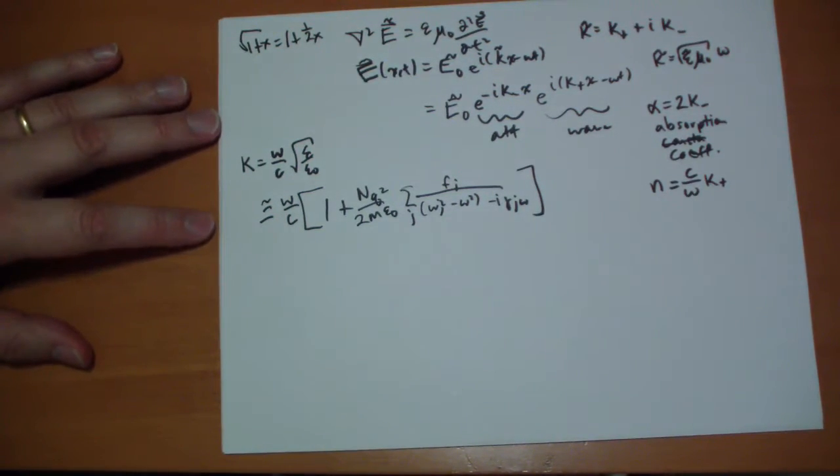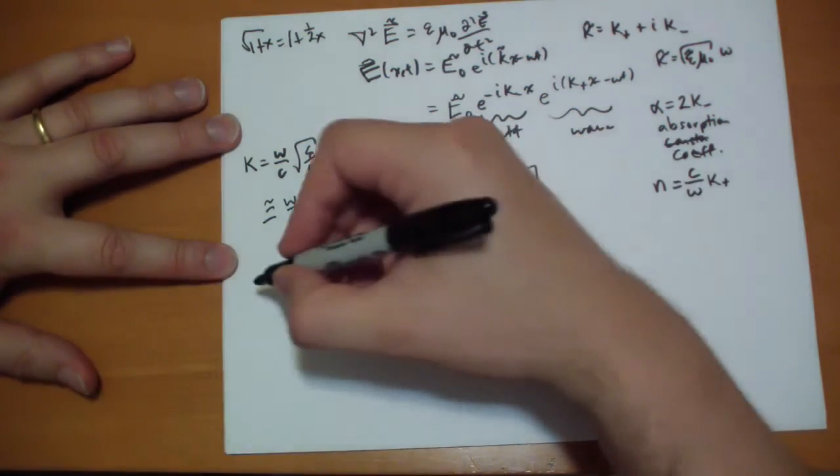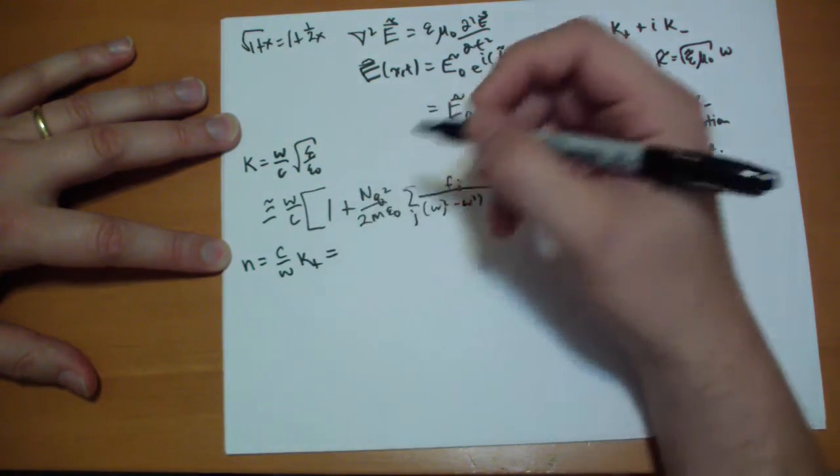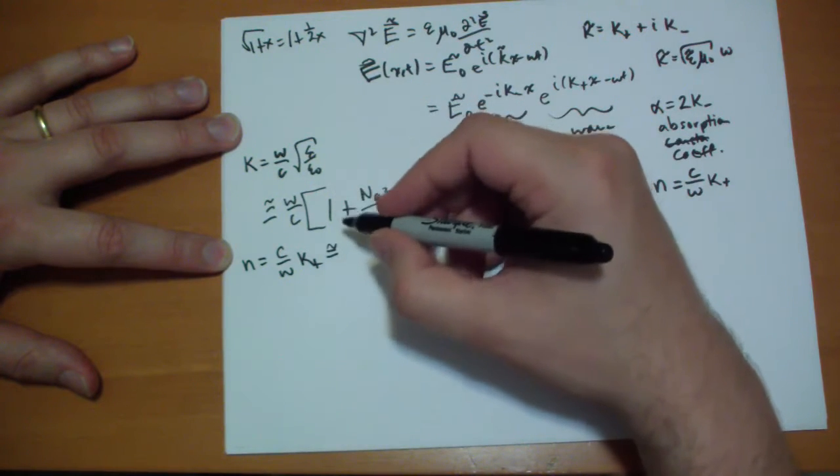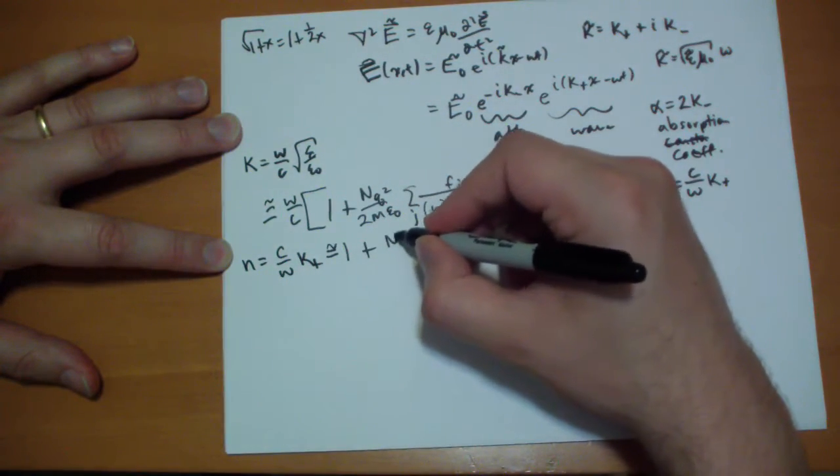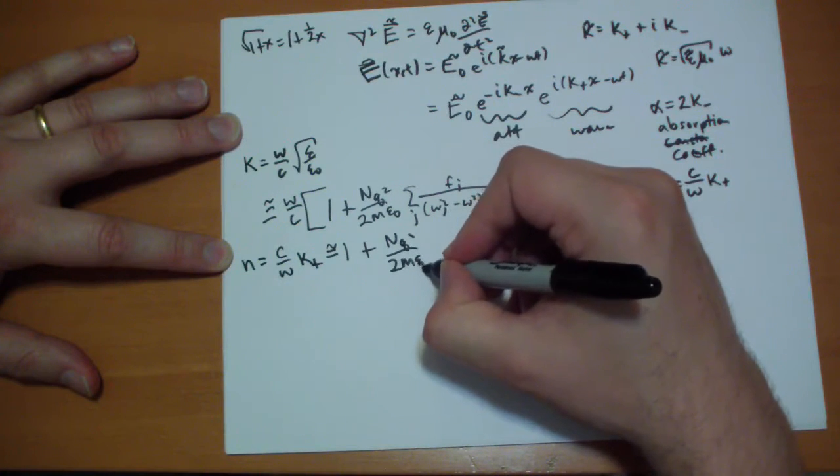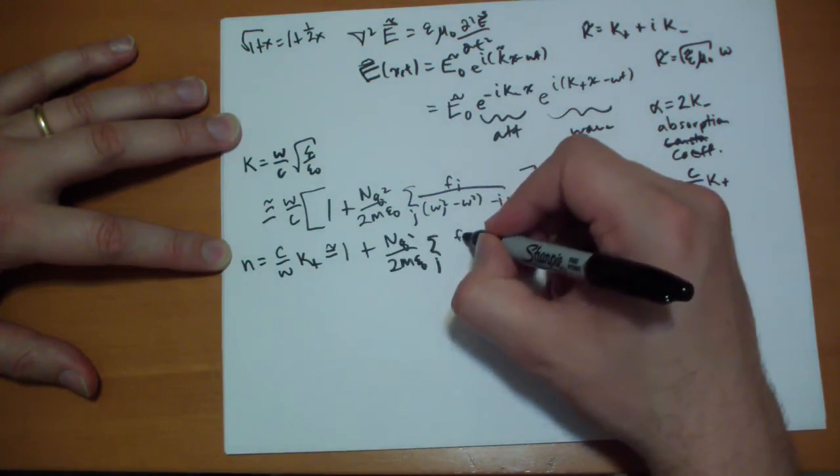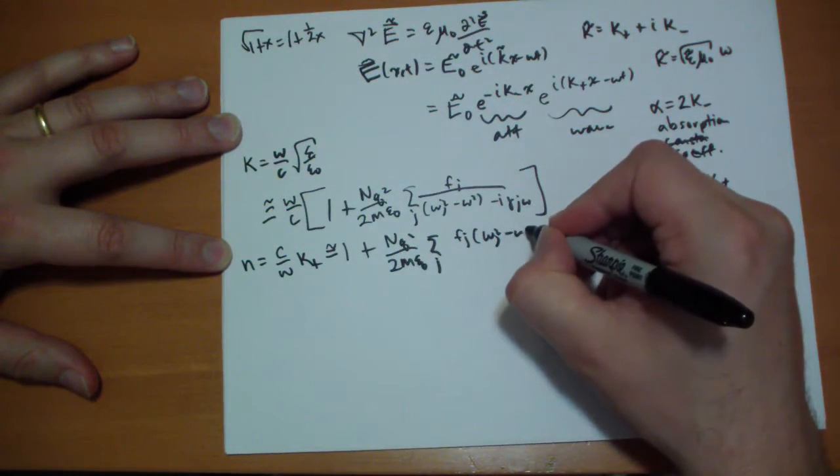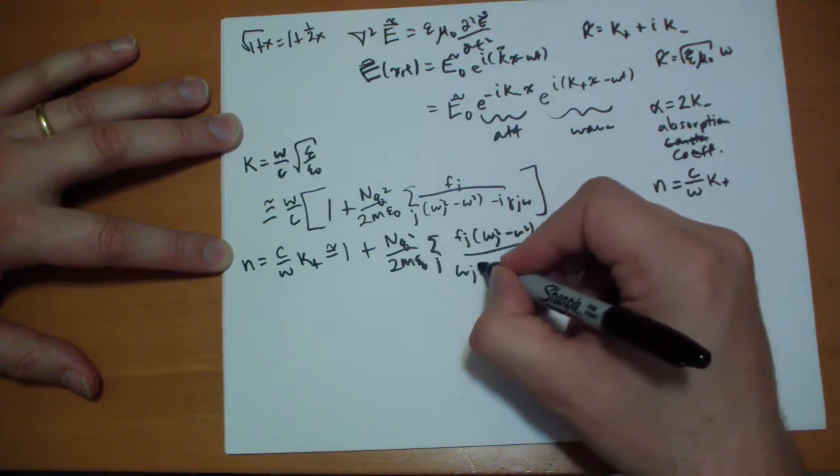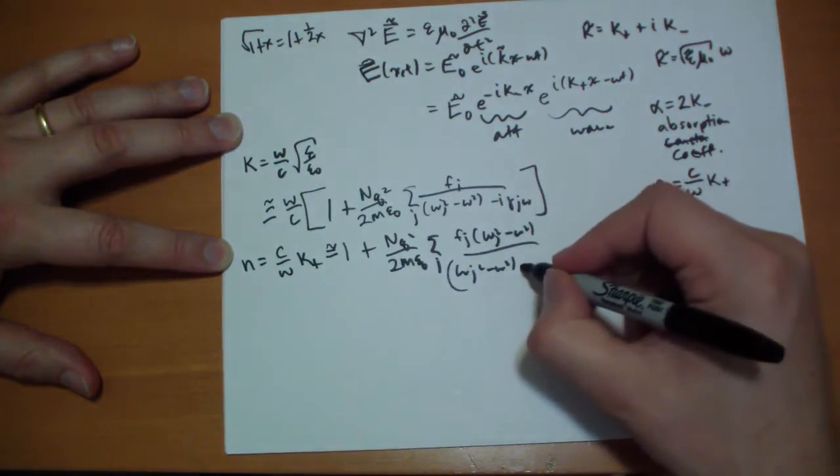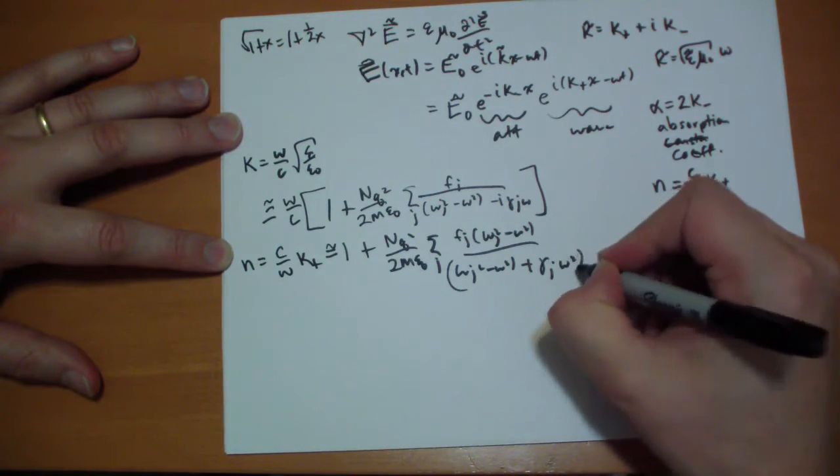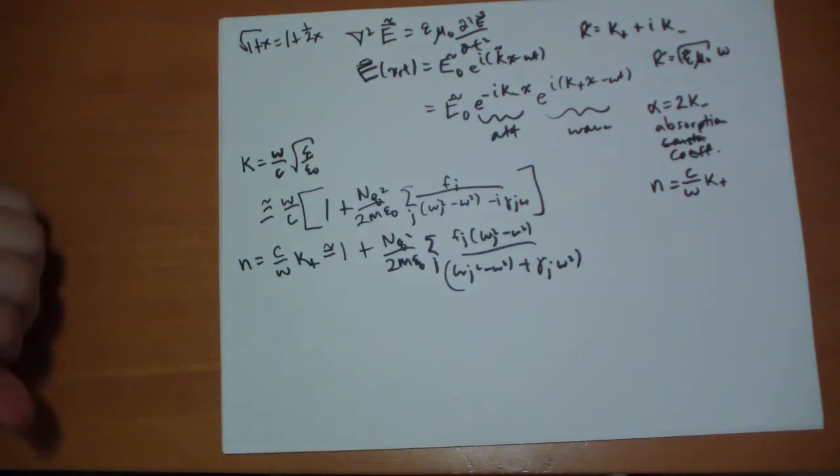Our index of refraction is the real part of that, which ends up being about equal to one plus n q squared over two m epsilon not, sum j of the same thing, except for when multiplying the top by omega j squared minus omega squared, where did that come from? Do the math, you'll see it. Plus gamma j omega squared. See that i is gone.